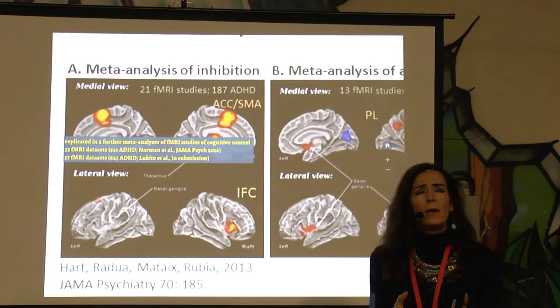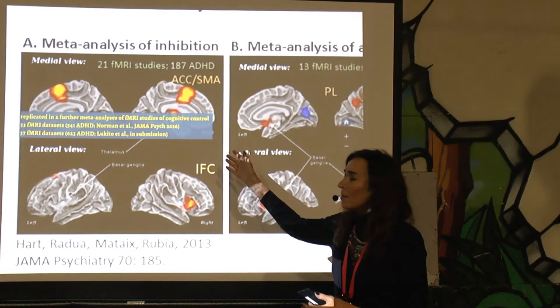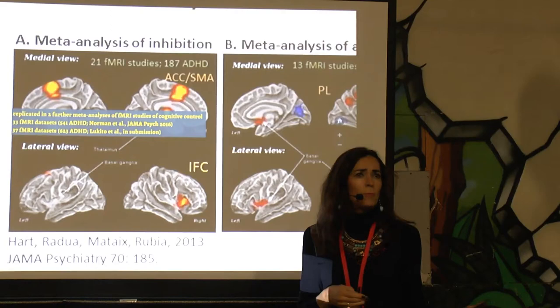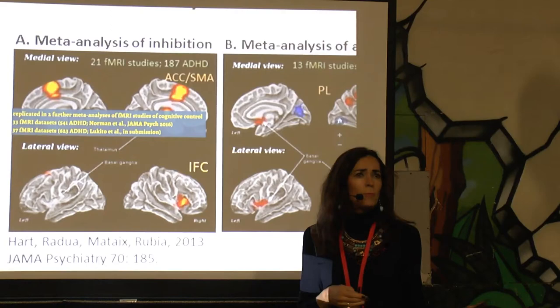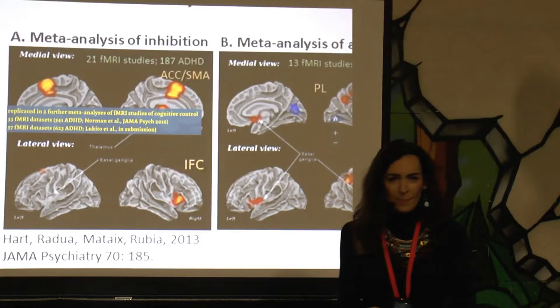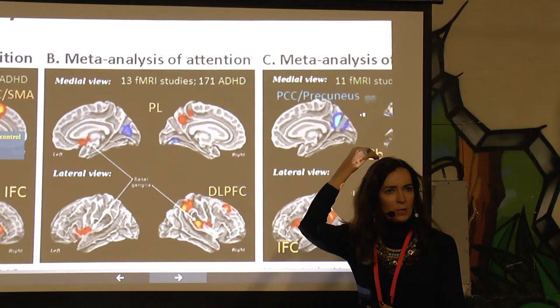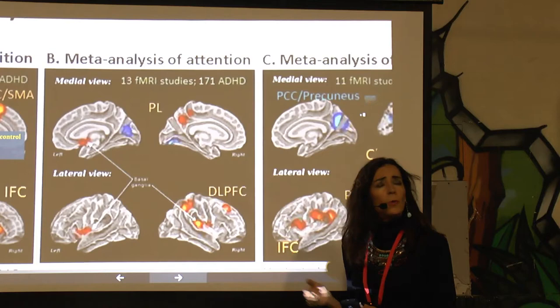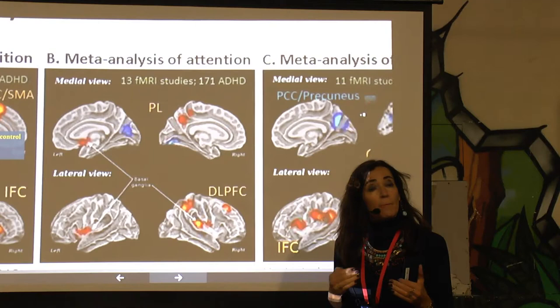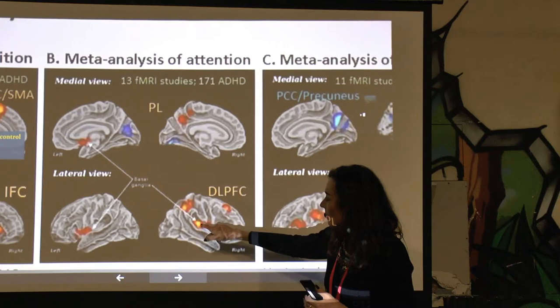In science you have to always replicate findings. We found this in three meta-analyses, and other groups have also found it in three additional meta-analyses — so this is a very robust finding. The inferior frontal cortex is impaired not only during inhibition tasks but also during sustained attention tasks. Another region which is impaired is the dorsolateral prefrontal cortex — more dorsal in the frontal lobe — which is important for attention and working memory. So there are different frontal abnormalities in these two distinct frontal regions, together with the basal ganglia.